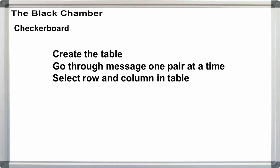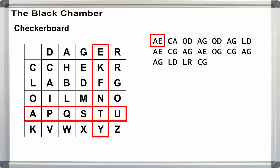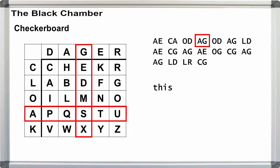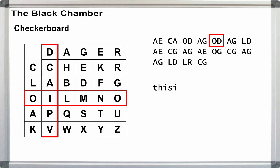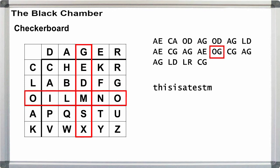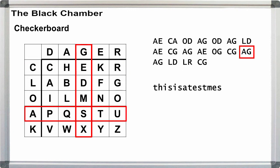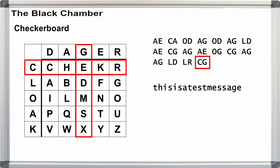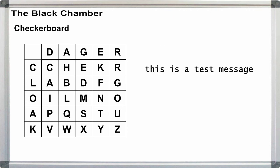Decrypting Checkerboard messages is just the reverse process. Create the table, and then go through the cipher message one letter pair at a time. The first letter of the pair will be our row index, and the second will be for the column. The intersection of row A and column E gives us T. C and A give us H. O and D gives us I. And A and G give us S. Continue for the rest of the message. Add word breaks, and we've got our plaintext back out. This is a test message.